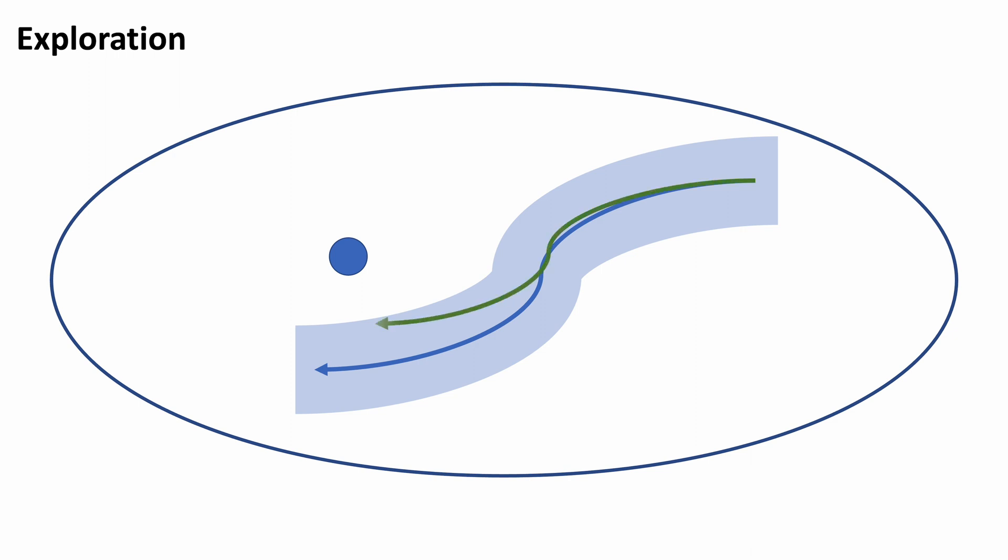If we execute this controller, it will generate a trajectory like the green curve, which is closer to the goal. Then we learn the dynamics again to form this green tunnel, and do one more iteration to learn a new controller.